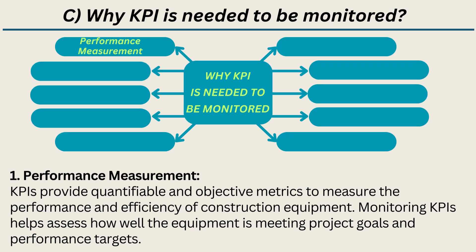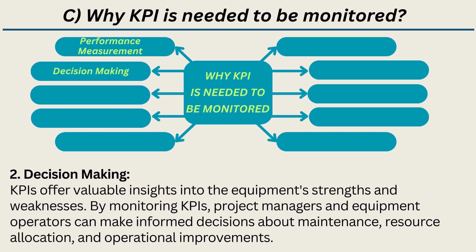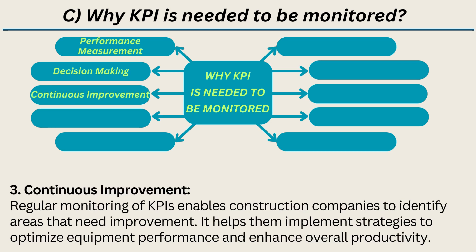C. Why key performance indicators (KPIs) need to be monitored. KPIs need to be monitored for several important reasons. 1. Performance measurement — KPIs provide quantifiable and objective metrics to measure the performance and efficiency of construction equipment, helping assess how well the equipment is meeting project goals and performance targets. 2. Decision-making — KPIs offer valuable insights into the equipment's strengths and weaknesses; by monitoring KPIs, project managers and equipment operators can make informed decisions about maintenance, resource allocation, and operational improvements. 3. Continuous improvement — Regular monitoring of KPIs enables construction companies to identify areas that need improvement and implement strategies to optimize equipment performance and enhance overall productivity.